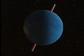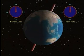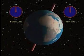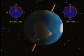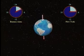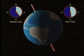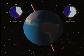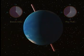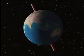Let's look at New York in the Northern Hemisphere and Buenos Aires in the Southern. We'll start a 24-hour clock for each when they pass through into daylight and stop the clock when they go into darkness. As you can see, New York has about 15 hours of daylight while Buenos Aires has only nine and a half.